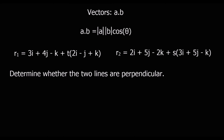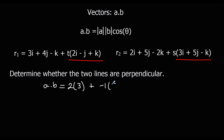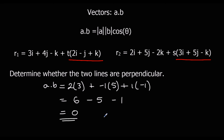Here's another question — pause the video and give it a go. Find out whether these two lines are perpendicular. We're looking at the direction vectors. a·b is: 2 times 3 for the i's, negative 1 times 5 for the j's, and 1 times negative 1 for the k's. That gives us 6, take away 5, take away 1, and that is 0. So they are perpendicular.